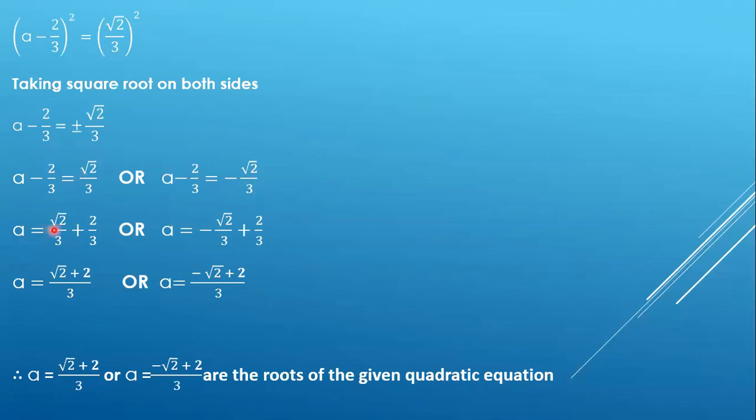For the first case with +√2/3, this -2/3 will go to the right hand side and become +2/3. Since the denominator is same, we can write it as (√2 + 2)/3.